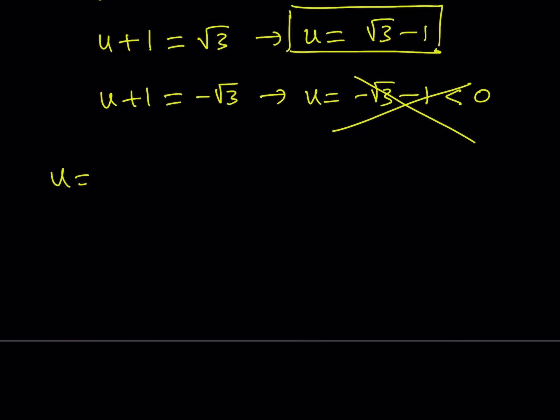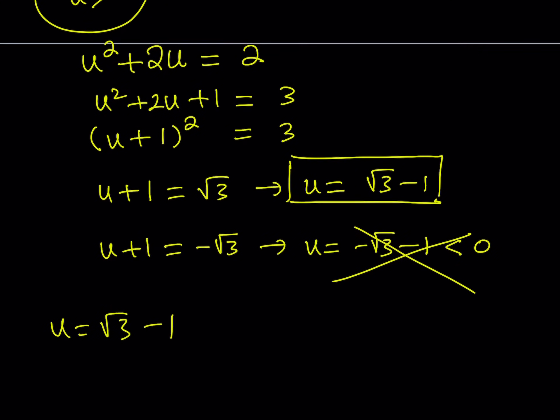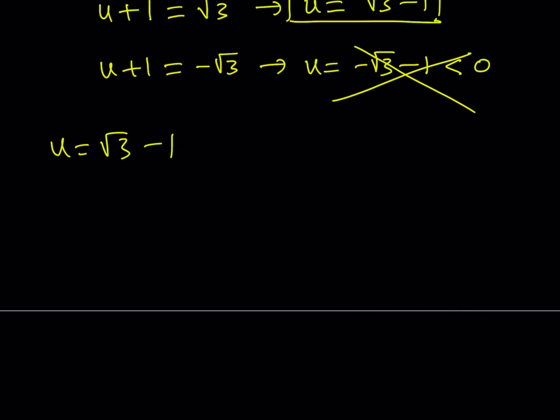So, now u equals root 3 minus 1. And what is u? u is square root of x. So, this means that the square root of x is equal to square root of 3 minus 1.